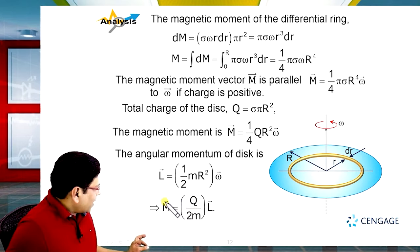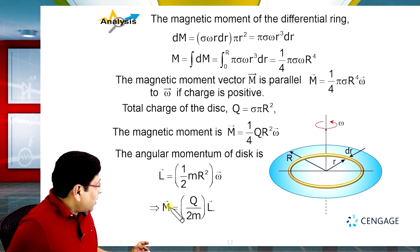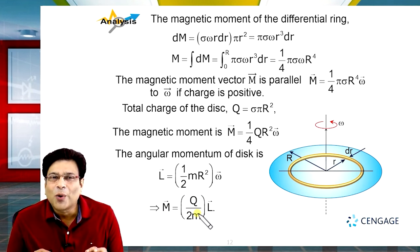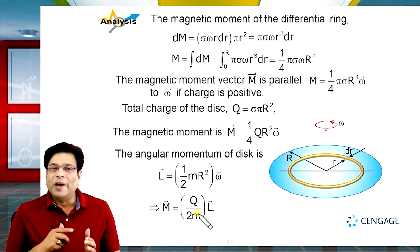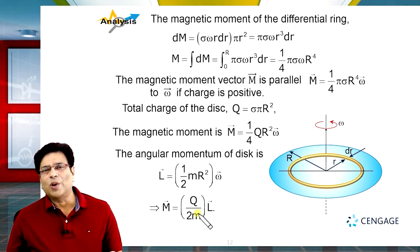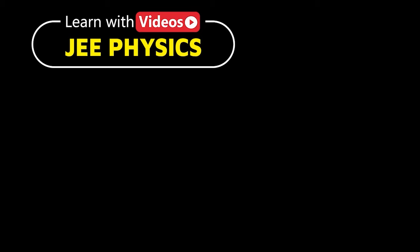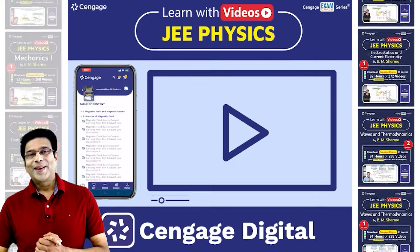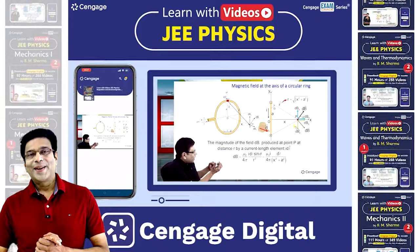So we have verified that m divided by L equals Q divided by 2m — that is, magnetic dipole moment divided by angular momentum equals total charge divided by twice the mass. This relation is applicable for any type of rotating structure: it is valid for a solid sphere, hollow sphere, or any type of rotating structure.